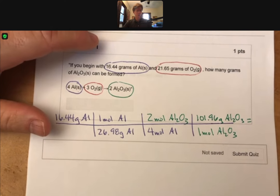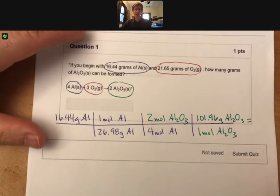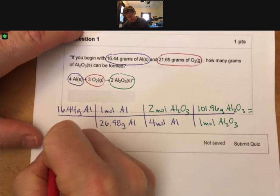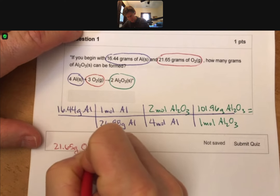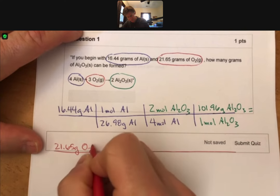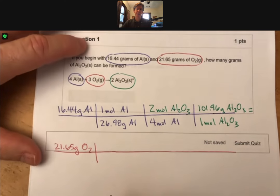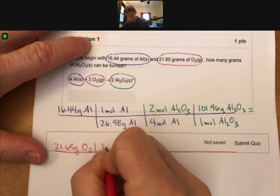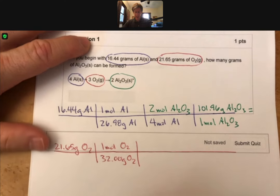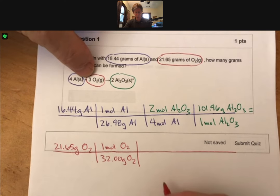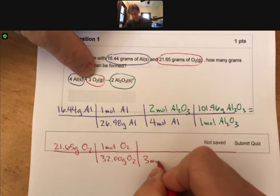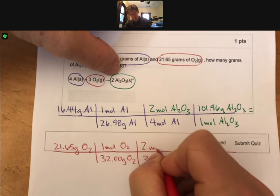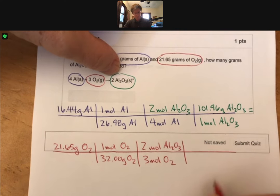And that's the part for the aluminum. Now let's do the oxygen. We have 21.65 grams of O2. We know that oxygen is 16. Two of them is 32. And now we have a 3 to 2 mole ratio. Three moles of oxygen reacted can produce 2 moles of aluminum oxide.